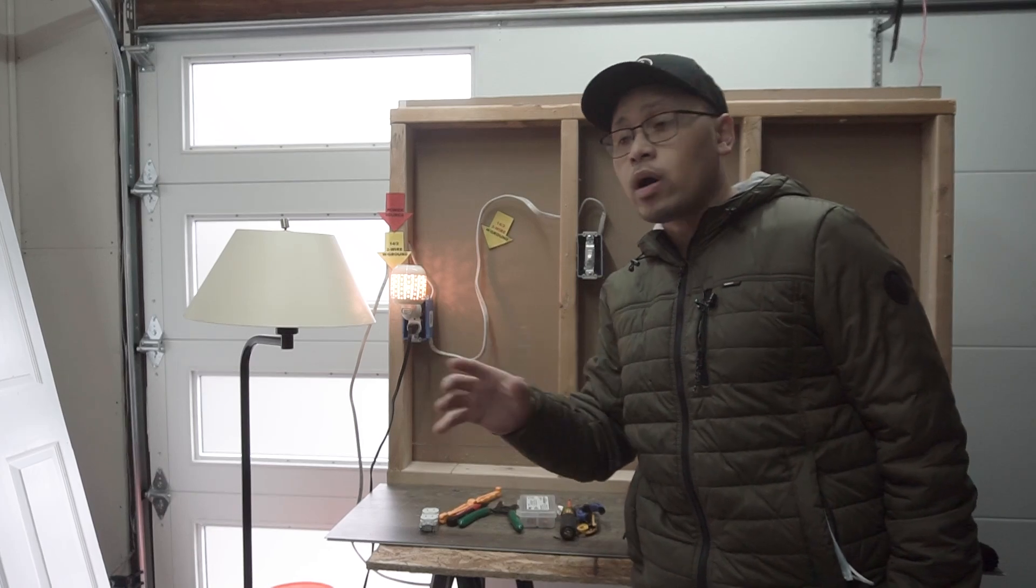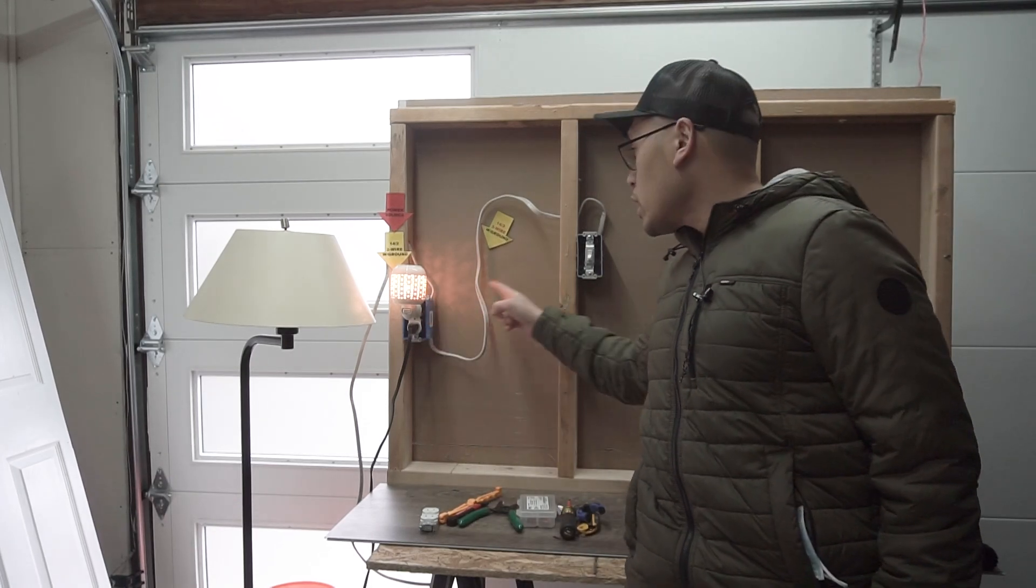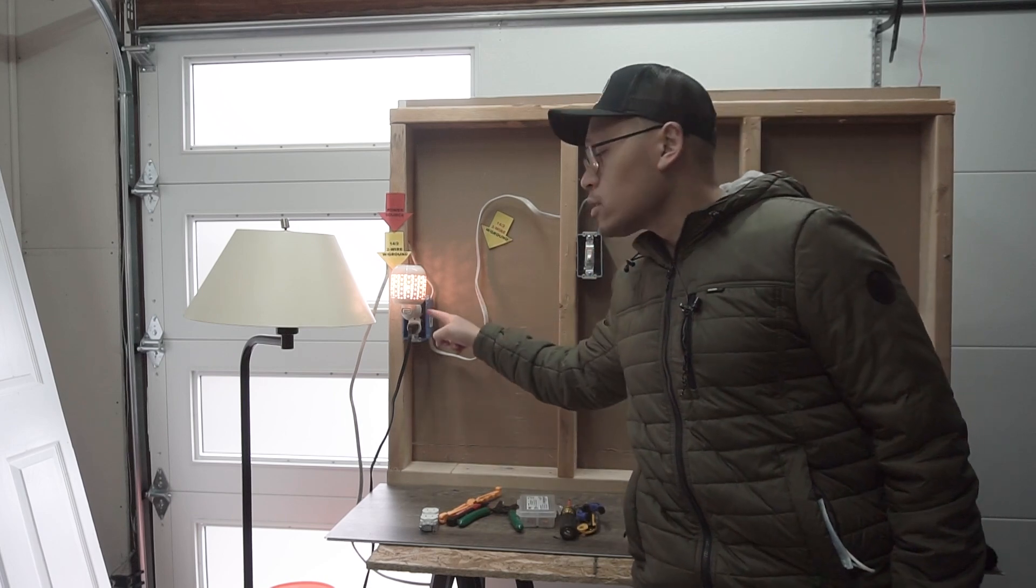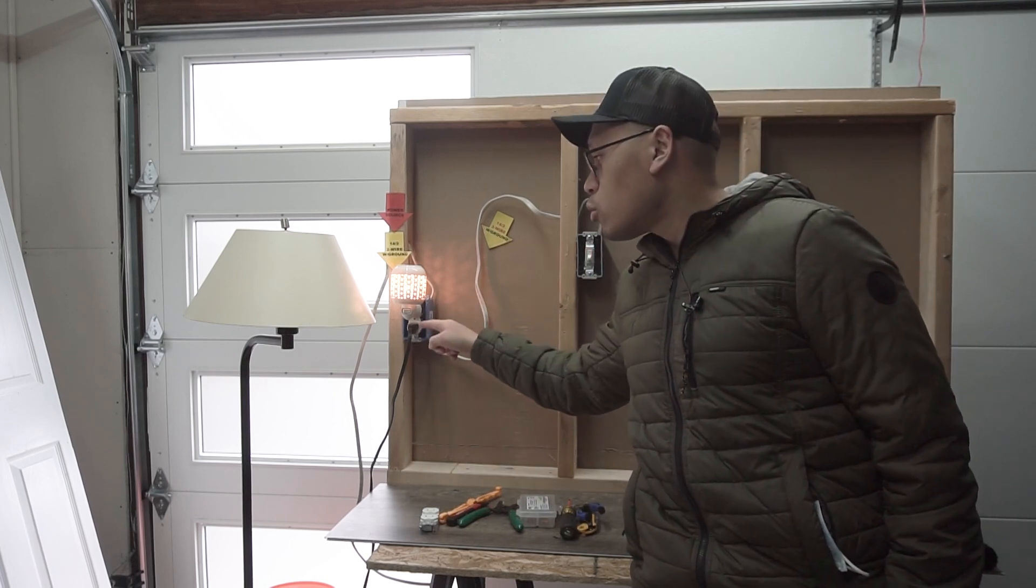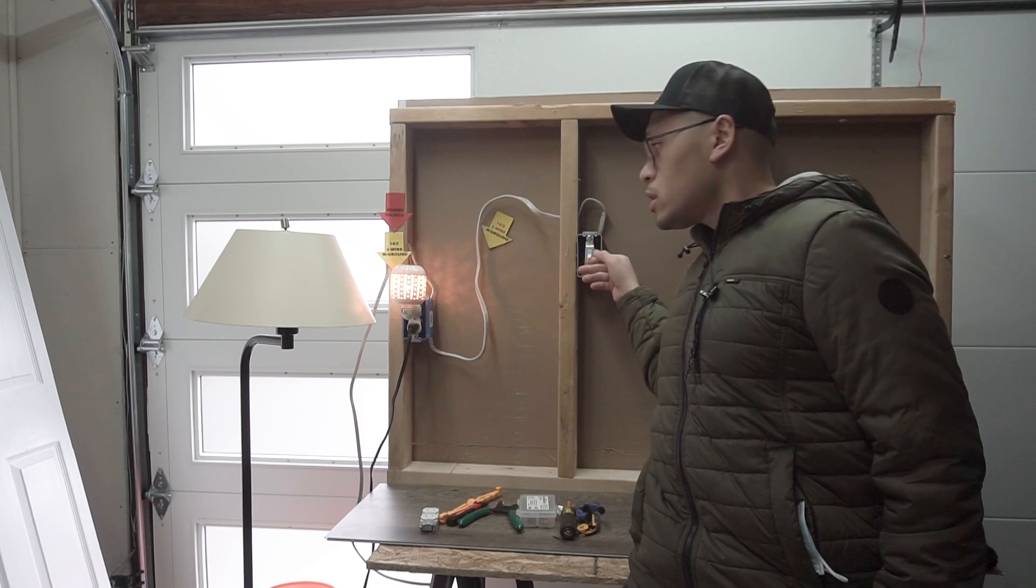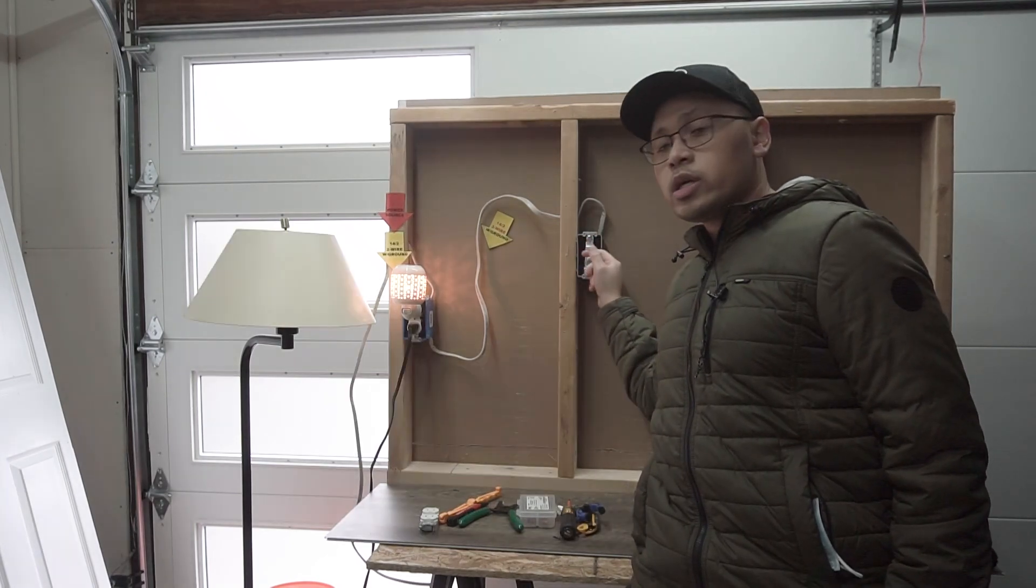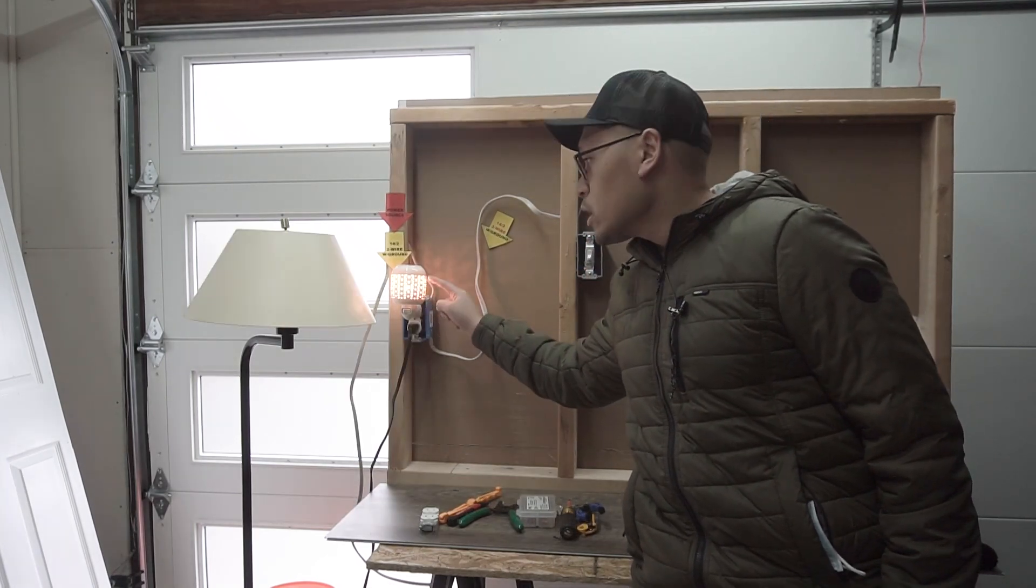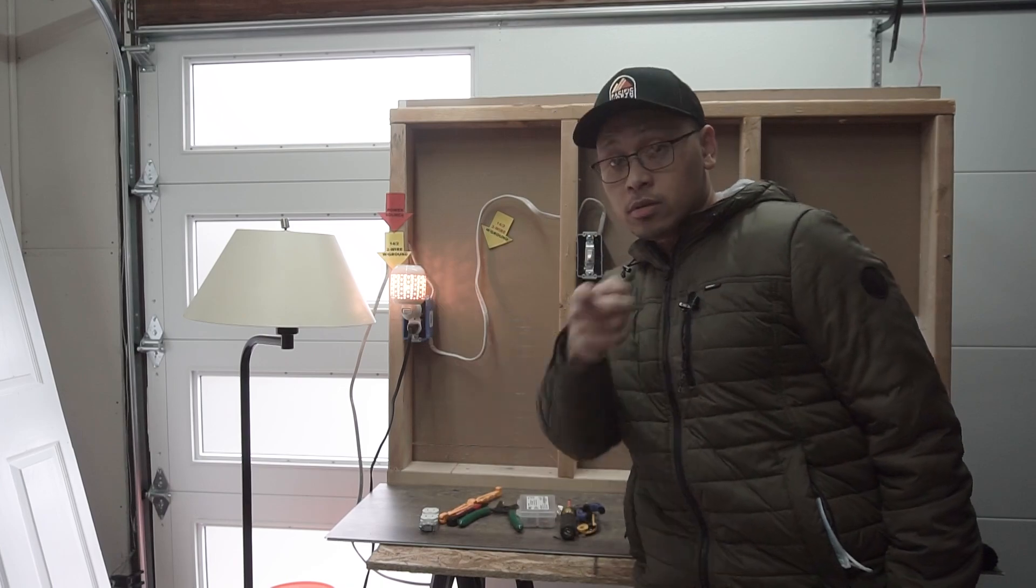On this episode, I'm going to be showing you how to wire a split receptacle with an end-of-run switch where the outlet is divided and you can control the bottom outlet like this with the switch and the top outlet is constantly powered on. So stay tuned.